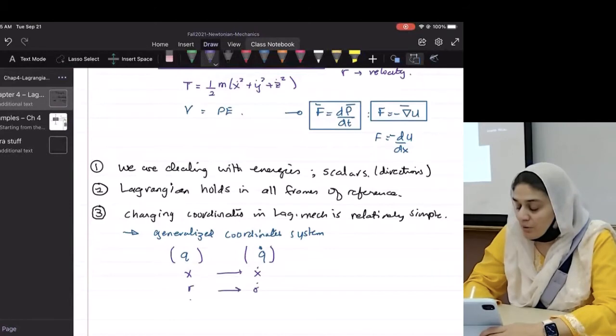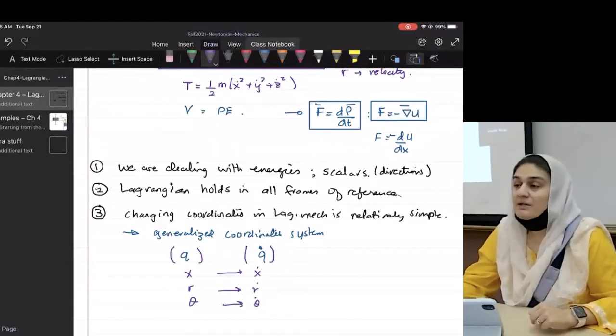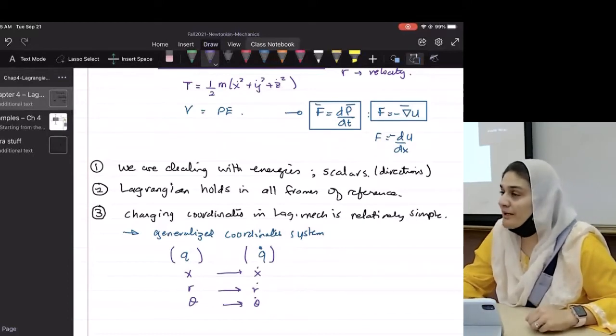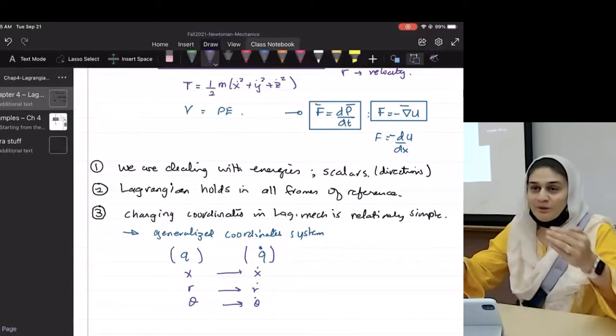So instead of saying X and X dot or R or R dot or theta or theta dot, you just call it a generalized coordinate. You do the whole problem with your generalized coordinates and at the end, you put the coordinates back in.